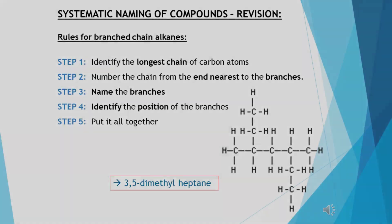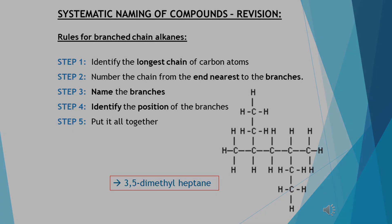Let's remind ourselves how we name branch-chain alkanes. You find the longest continuous chain — not necessarily a straight chain, but the longest continuous chain. Then you number the branches to give them the smallest number possible, choosing to number left to right or right to left, whichever gives your branches the smallest number. Then we put it all together.